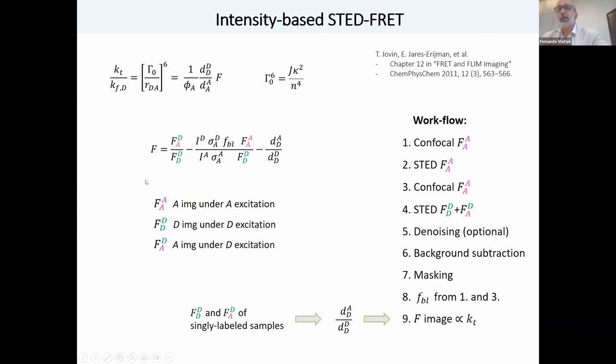Now we need to do intensity-based STED FRET. And that requires a bit more care. For example, to compensate for photobleaching, we included in our workflow, like a confocal image before and after STED to compute how much the acceptor was being bleached. And then, I mean, the input parameters are, as usual, three images, like acceptor-acceptor images, donor-donor, and donor-acceptor images, like in a normal FRET imaging experiment.